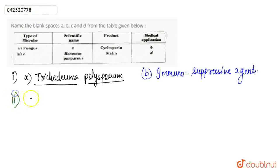Then for the second part, the scientific name given is Monascus purpureus. Monascus purpureus is basically a yeast, which is a fungus. This is the C part.